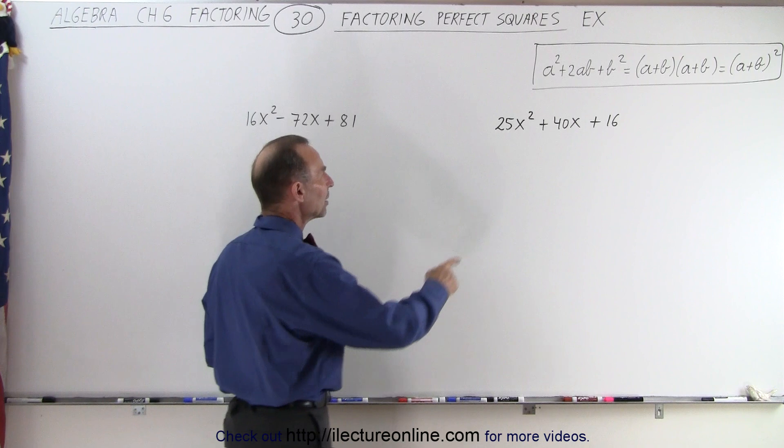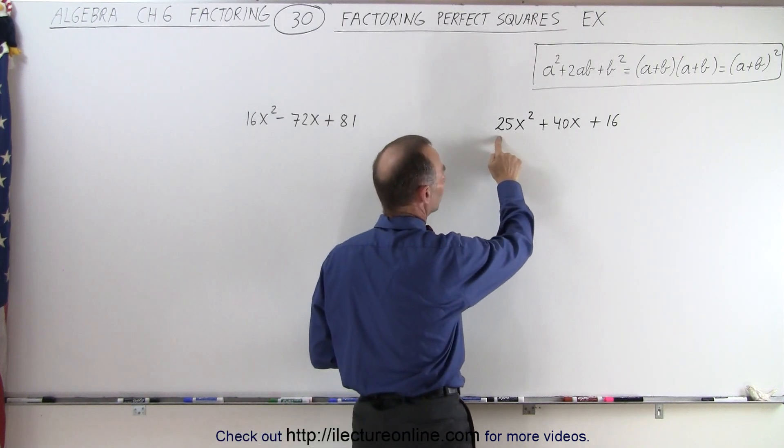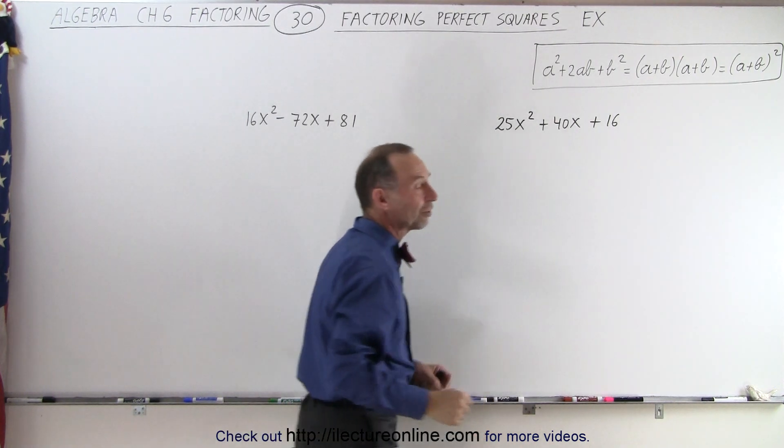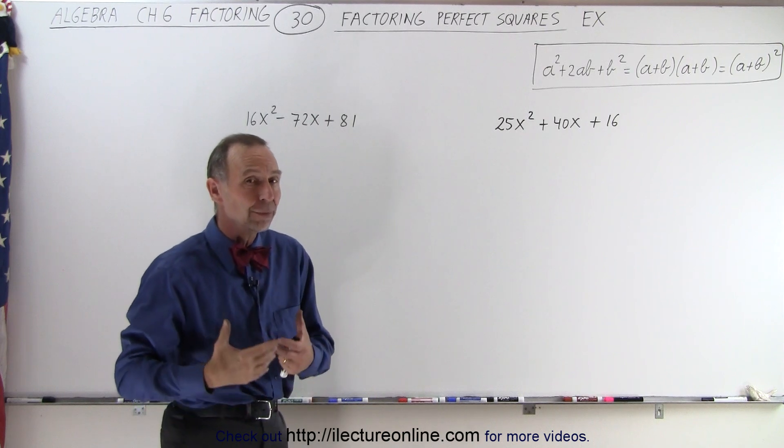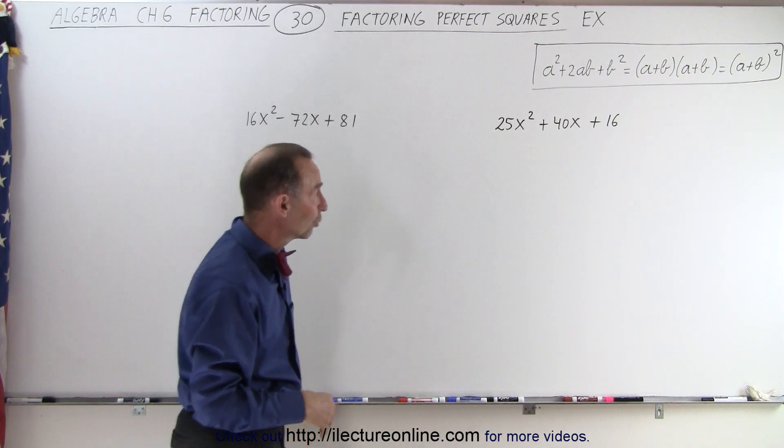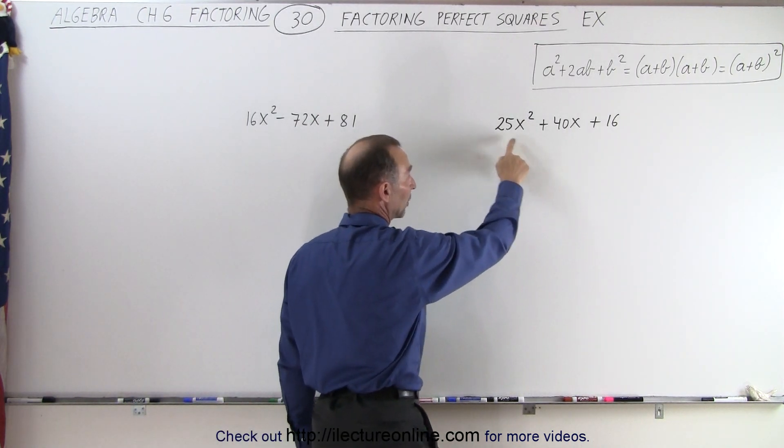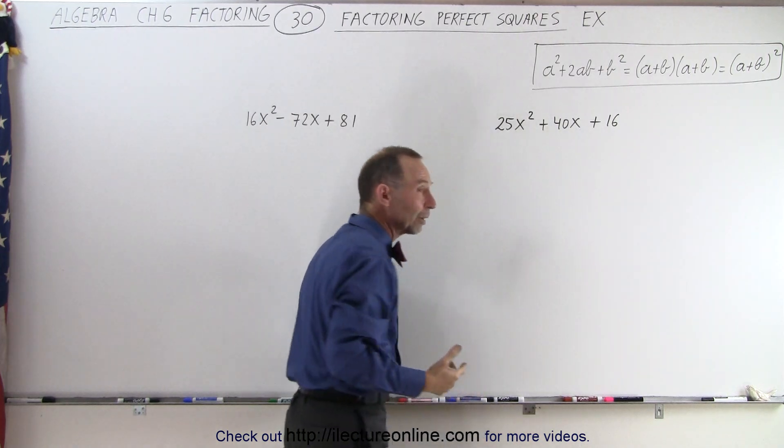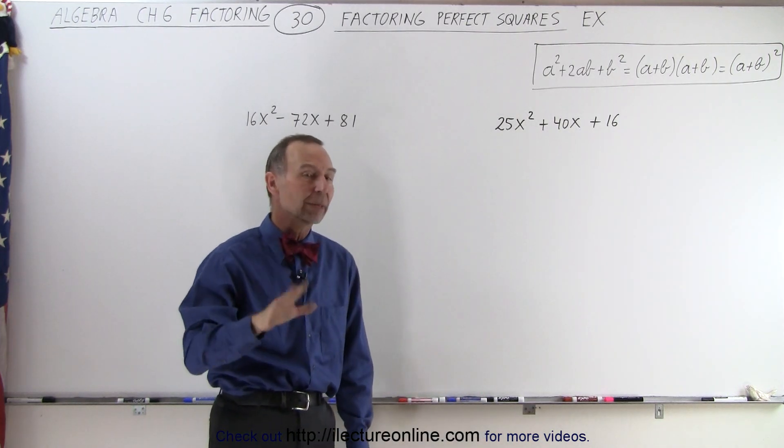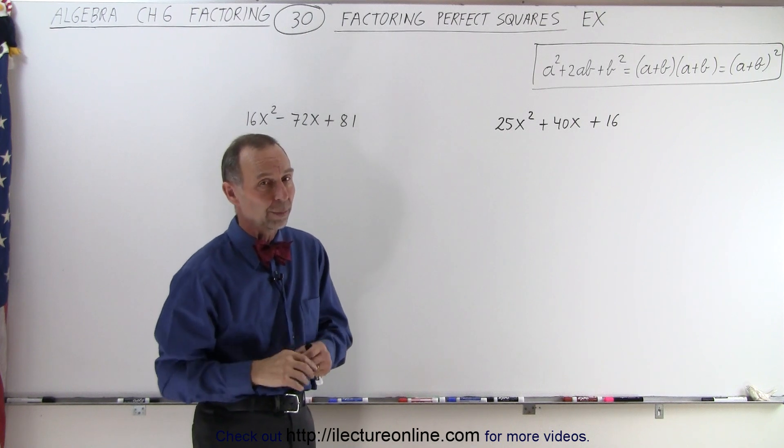We take a look at the numerical coefficient of the first term and the numerical coefficient of the last term to see if they are perfect squares in themselves. It turns out that 25 is 5 squared and 16 is 4 squared. So when you see that, there's a possibility that that trinomial may be a perfect square.